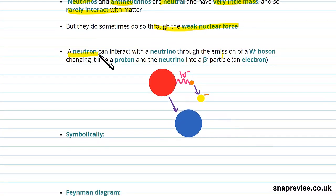So a neutron can interact with a neutrino through the emission of a W-boson, which changes the neutron into a proton, and the neutrino into a beta-minus particle, which is the electron.